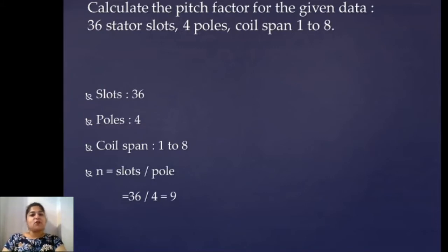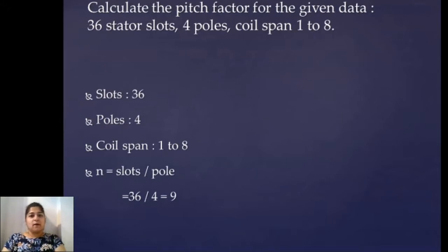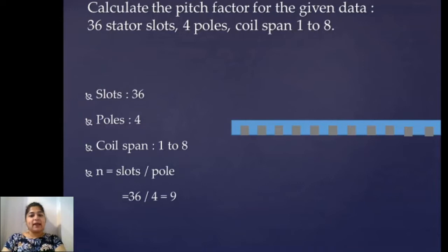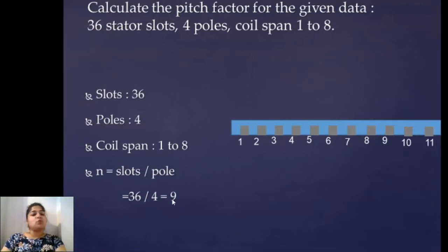So for a full pitch coil there should be 9 slots between the two sides of the coil. But the coil span is given as 1 to 8. You might think the coil is shorted by one slot, but it is better to go through the figure. I'll draw a section of the stator in a horizontal way to understand it better, and put one side of the coil in slot number 1.